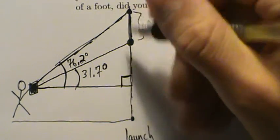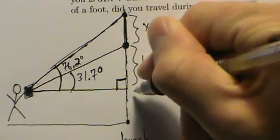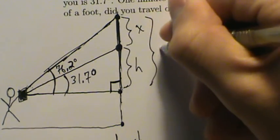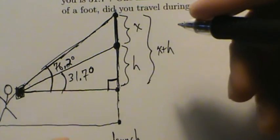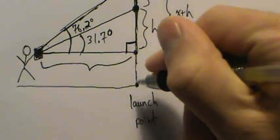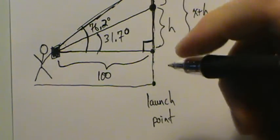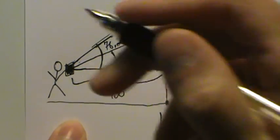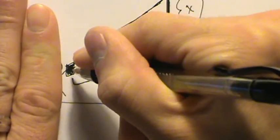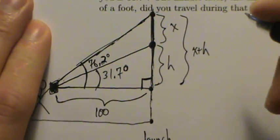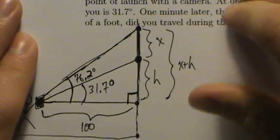We'll call the lower portion of the balloon's height H, so the full height at the second position is X plus H. The horizontal distance from the launch point to the camera is 100 feet, as stated in the problem. So 100 feet is the base of both right triangles.